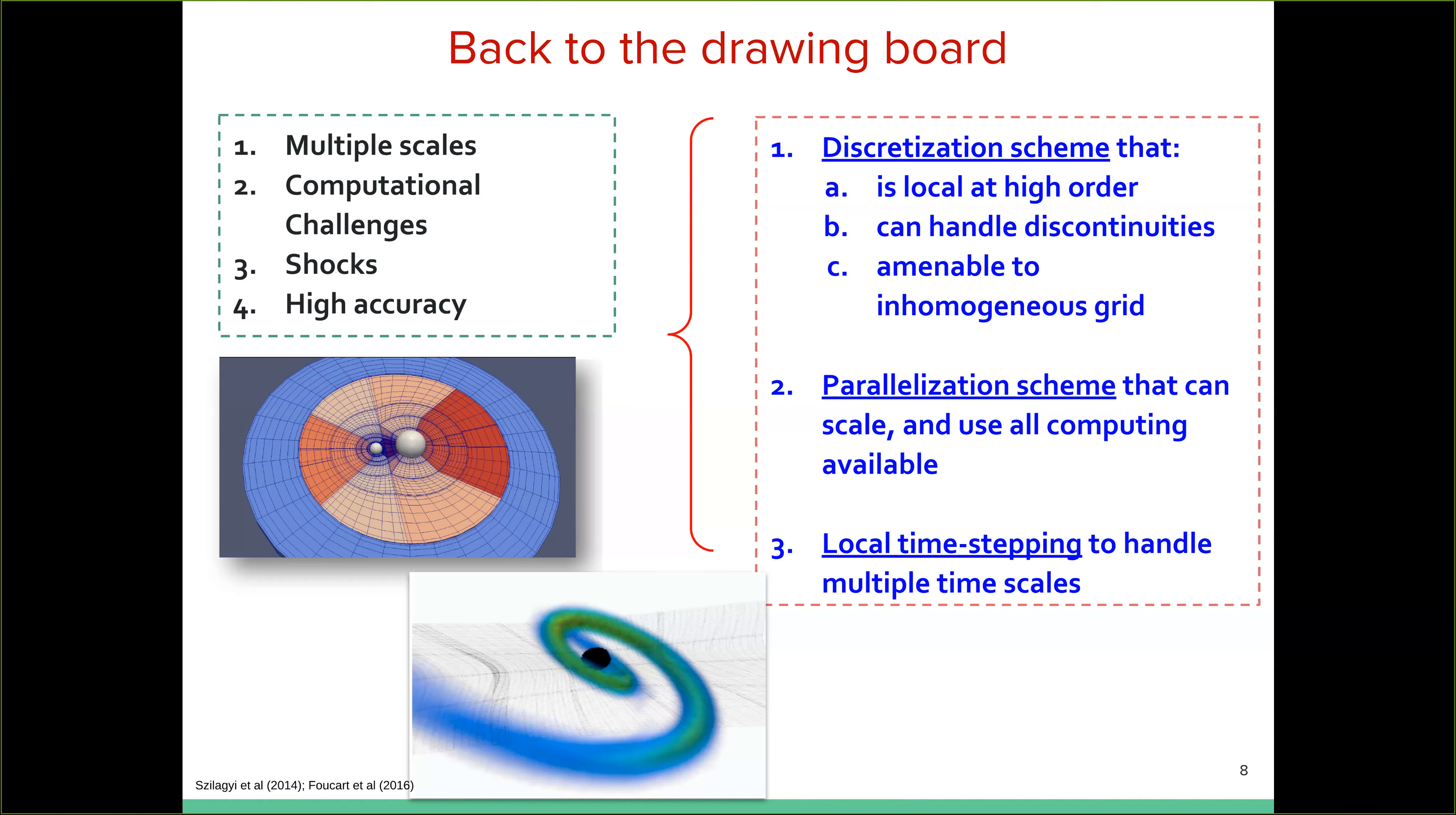And the third ingredient is the use of local time stepping. This will allow us to evolve the evolution equations of the Einstein system of the hydrodynamic systems, maybe the MHD system, according to the local requirement of the length scales of the problem. So wherever the length scales are small, we need to take small time steps. Yes. But where the length scales are clearly very large, why should we continue to take the same small time steps? And local time stepping is a technique that allows us to not do that.